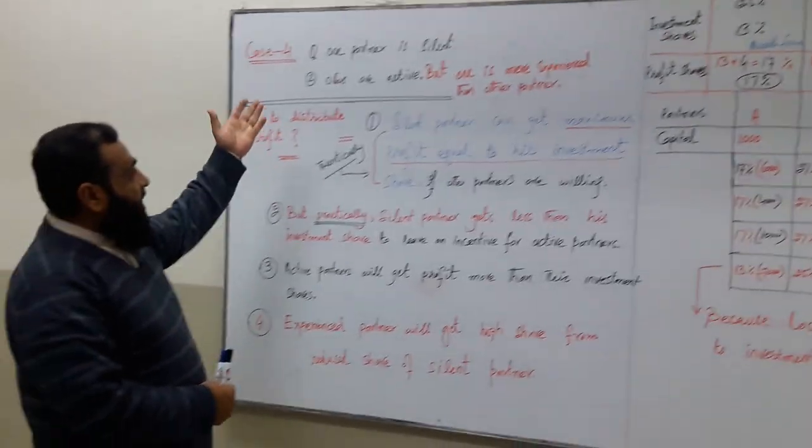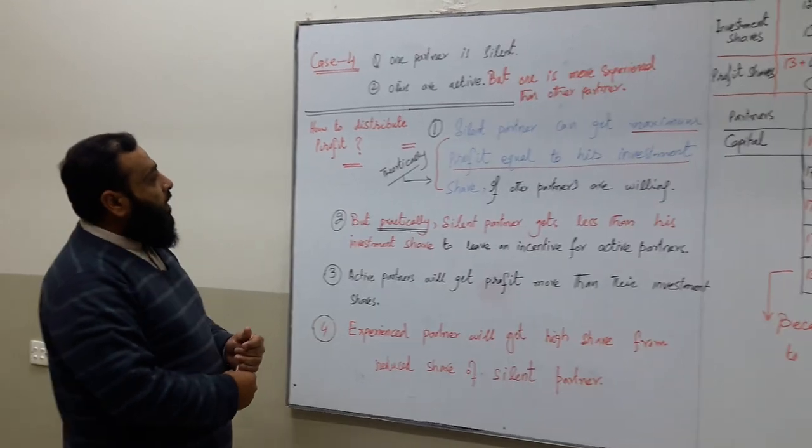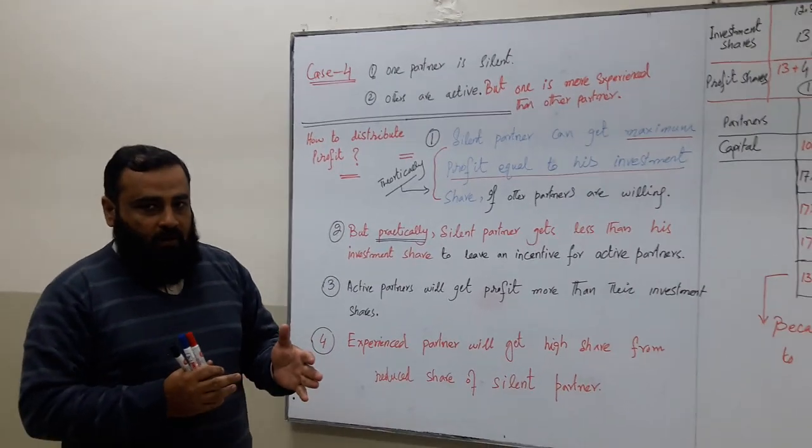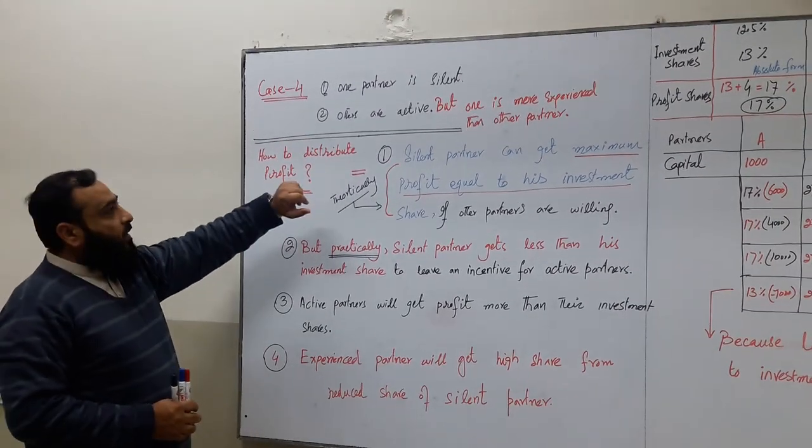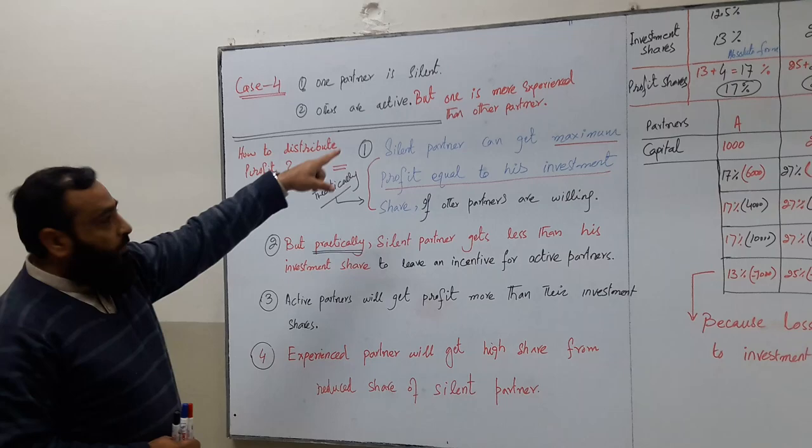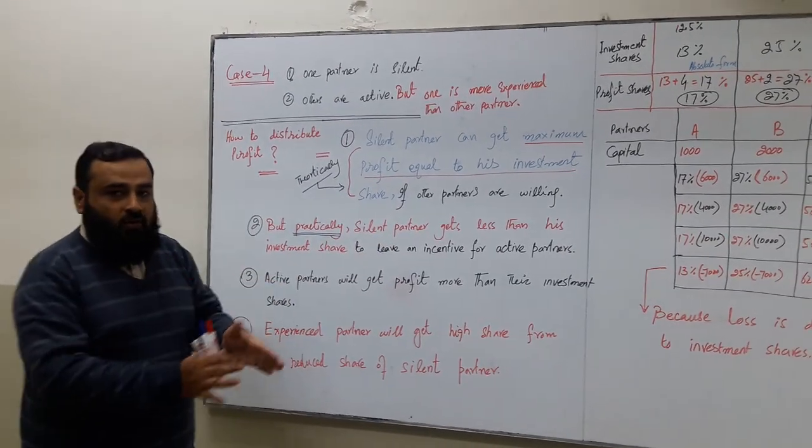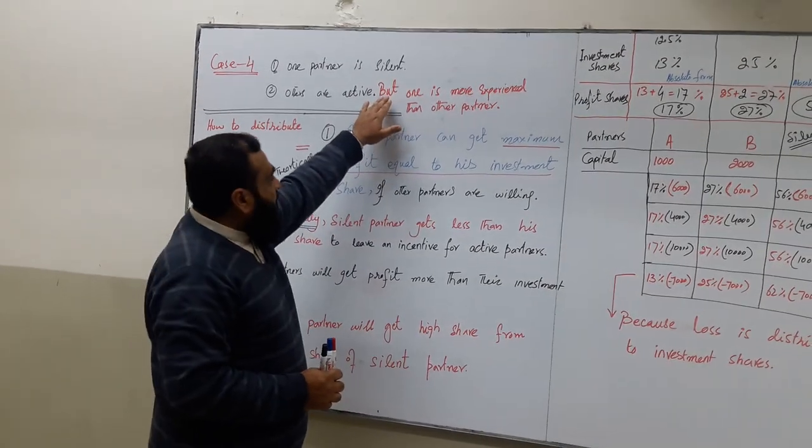Now we are moving forward toward Case 4 of profit and loss distribution mechanism. Case 4 is a little bit different from Case 3. Fifty percent of the information is from Case 3 - that one partner is silent while other partners are active. This was Case 3, but there are some changes in Case 4 now.